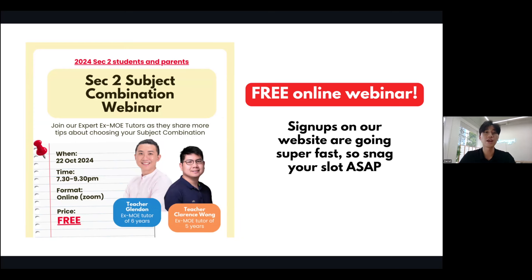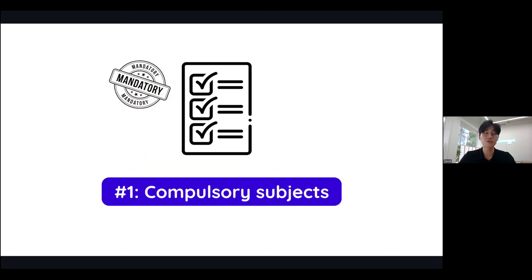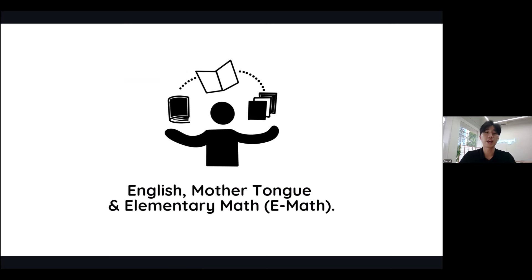Now jumping straight into it. The first thing you need to consider is this: regardless of what subject combination you choose, you must be aware that there are compulsory subjects which includes English language, mother tongue language, mathematics, science, and humanities. There are three subjects that are fixed, which is English, mother tongue, and your elementary math — in short, E-math.